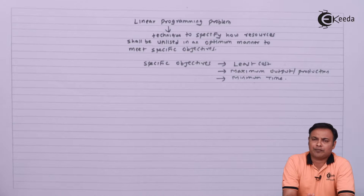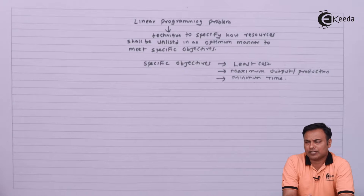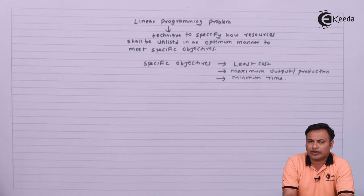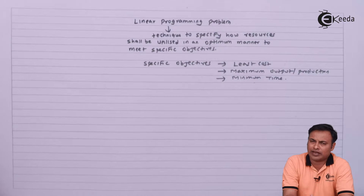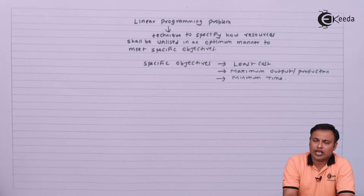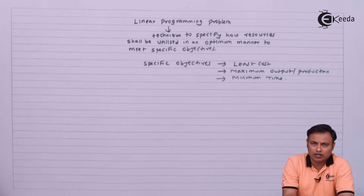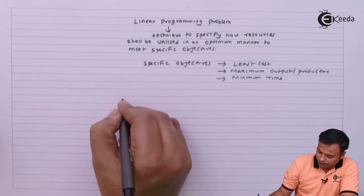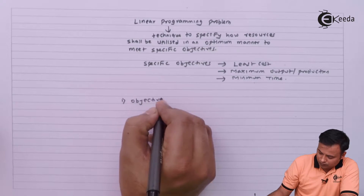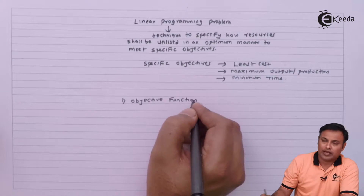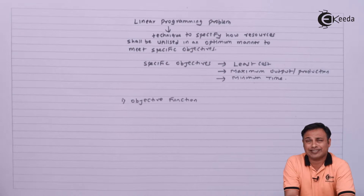The purpose can be to minimize the cost, to maximize the sales or the profit or the contribution, or it can be to maximize the production, output, or anything like that. So every linear programming problem will have a maximization or minimization as its objective function, and this objective function will be denoted by Z.